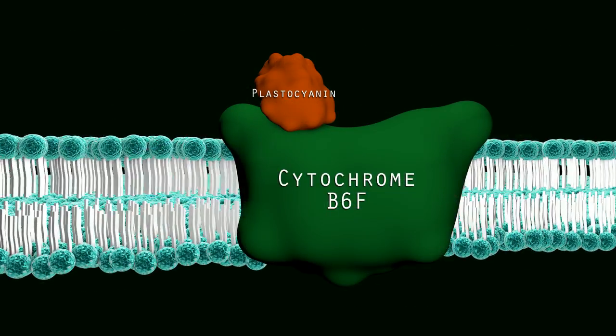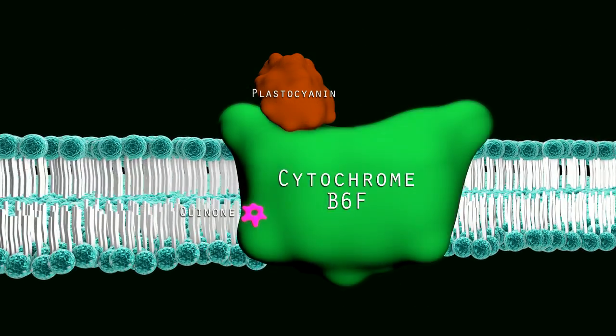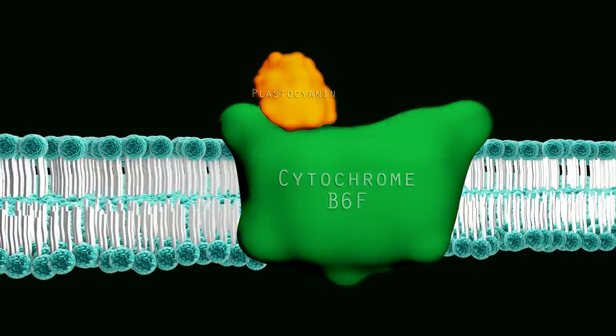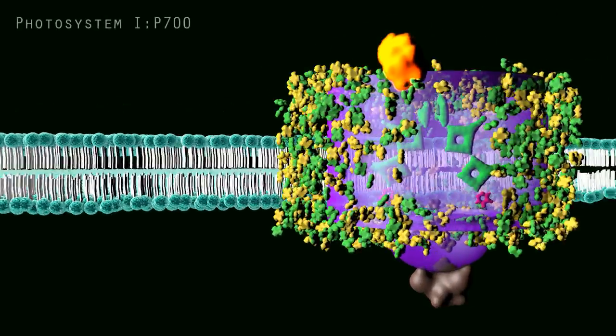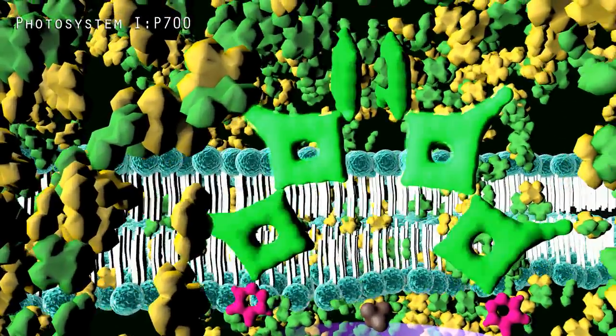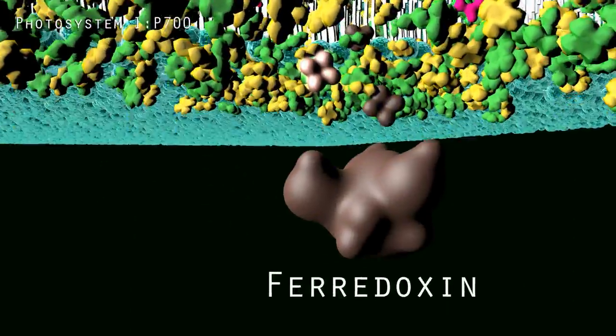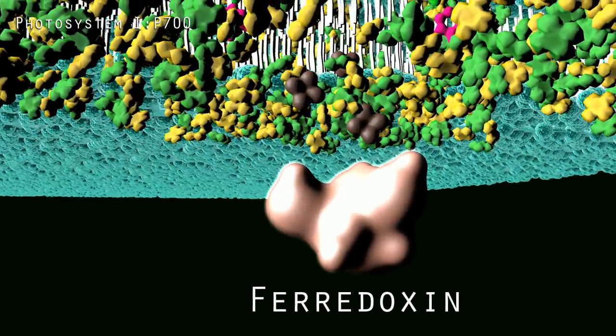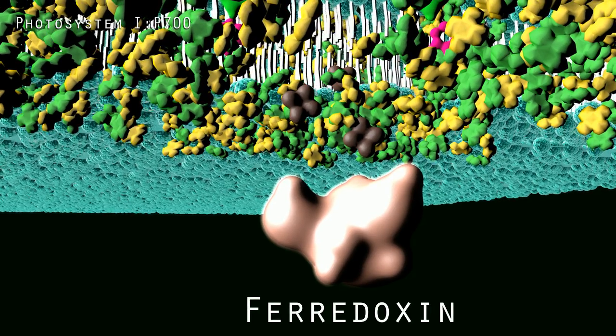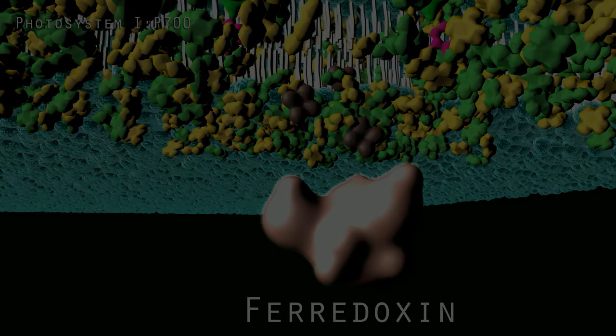This quinone dissociates from photosystem II, diffuses into the membrane, and transfers its electron to cytochrome b6f and plastocyanin which takes the electron to photosystem I. This electron replaces an electron in the activated P700 reaction center of photosystem I that has been transported from a pair of chlorophylls down a series of proteins to ferridoxin.